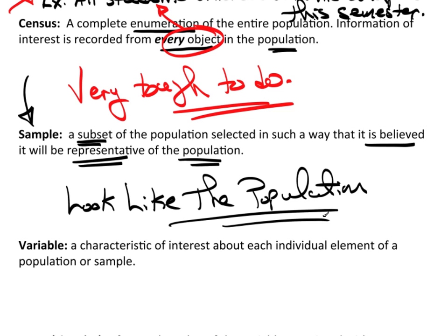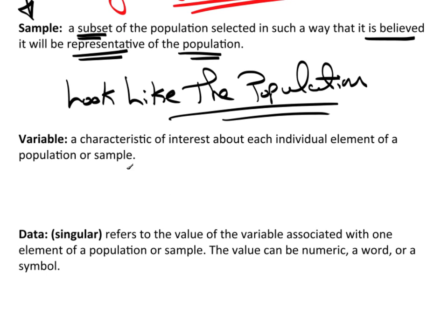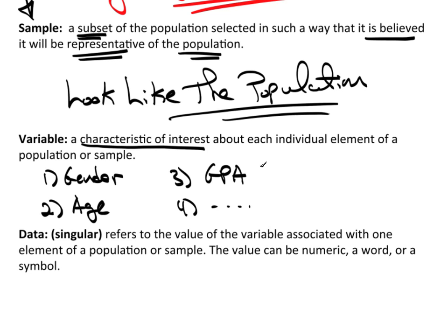So it's extremely important that the sample is representative of the population. It needs to look like the population. Otherwise, when we work with that sample, our results will not be valid. Now a variable is a characteristic of interest about each individual element of a population or sample. So let's go back to that population we're talking about every student on campus. Well, one variable may be the gender. See gender is a characteristic that I'm interested in. I may want to break this data down by male and female. I may be interested in their age. I may be looking for perhaps their GPA. And so forth, et cetera. Each one of these are variables. It's a characteristic about each individual element. In this case, the element is a person. It's a characteristic about the person, each individual person that I'm measuring.